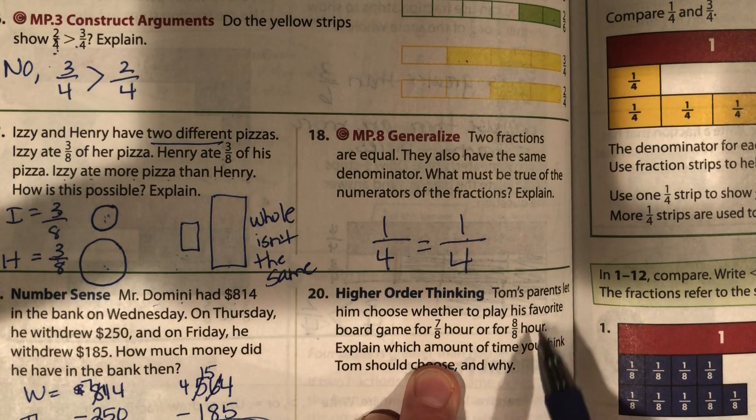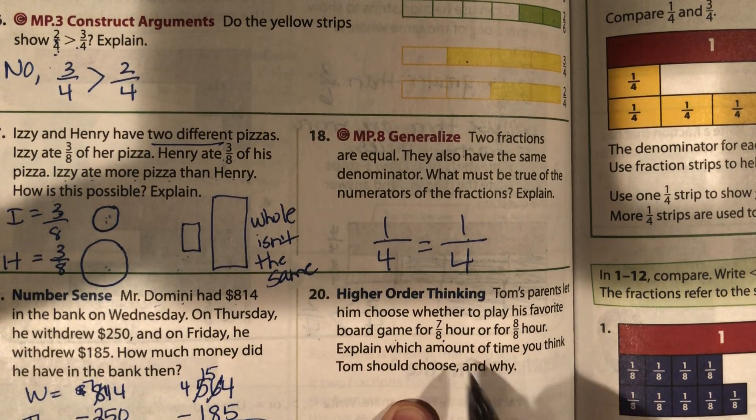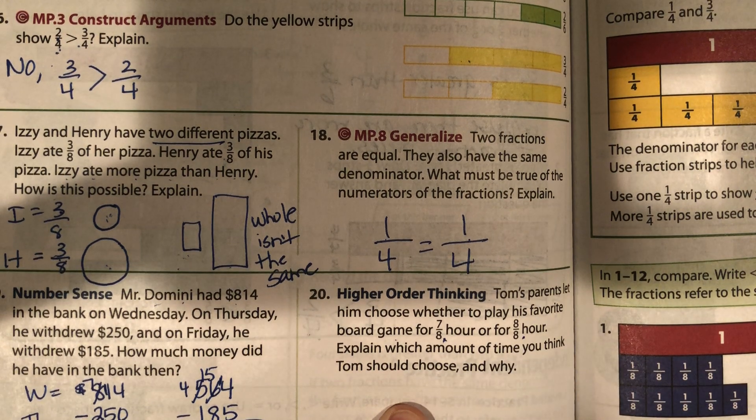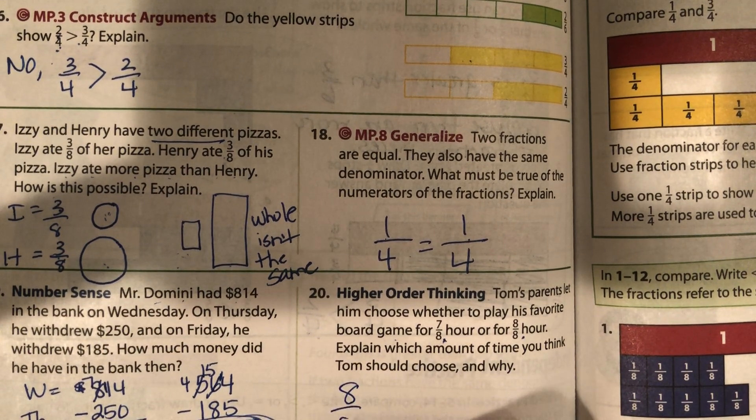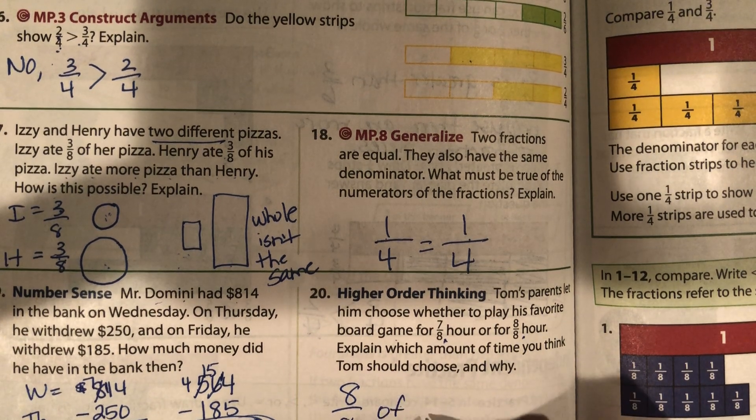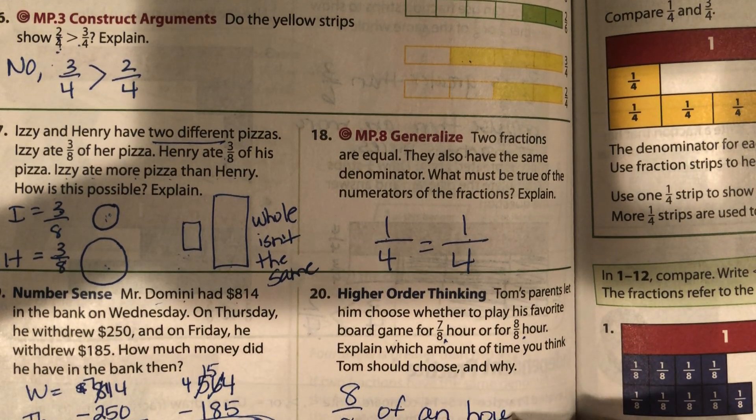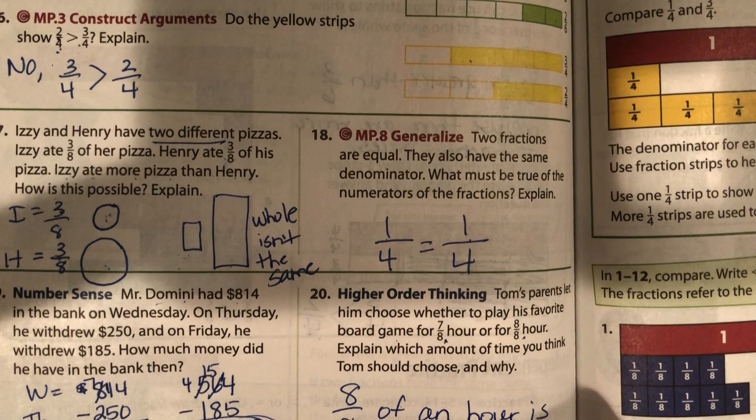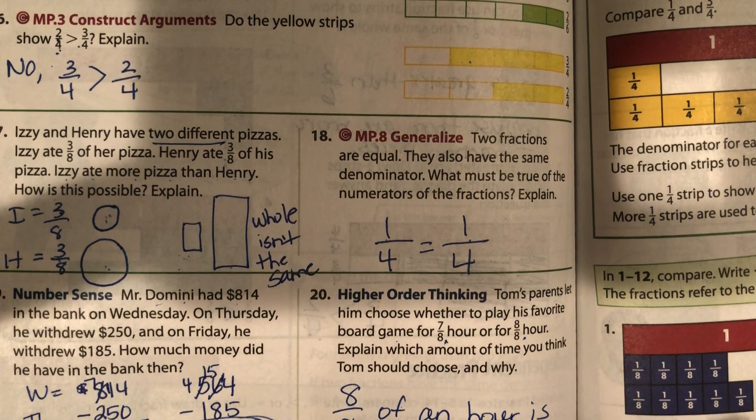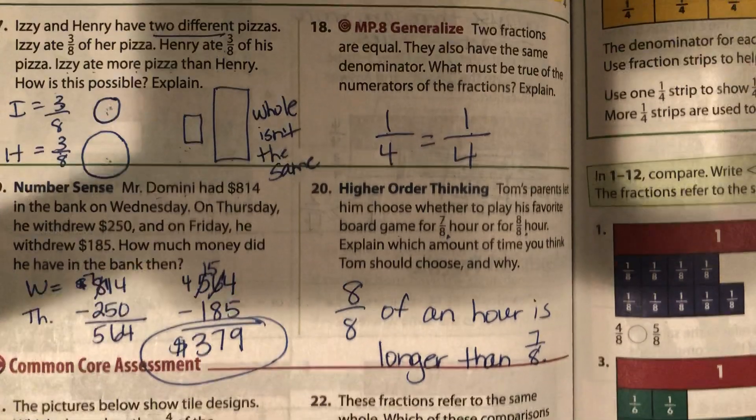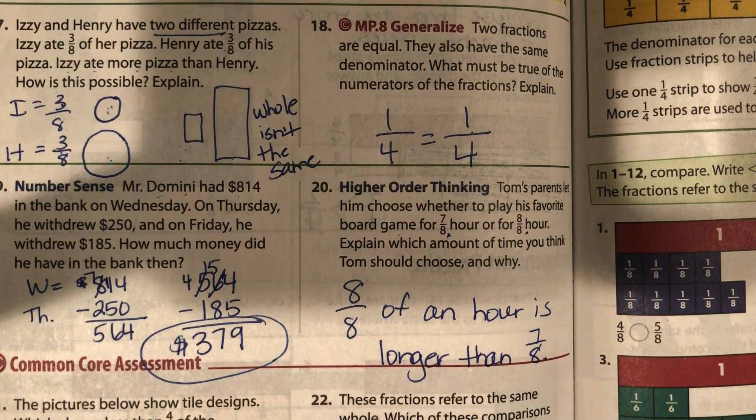Tom's parents let him choose whether to play his board game for seven-eighths of an hour or eight-eighths of an hour. Explain which amount of time you think he should choose. Well, eight-eighths of an hour is longer. Let's hope he was smart and chose eight-eighths because it's longer than seven-eighths.